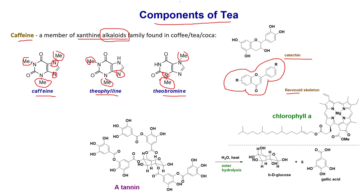Another big component is chlorophyll, which is present in every leaf. The brown coloring that gives tea and coffee its color is called tannin. The tannin molecule is pretty complex — it has a glucose molecule, and in the presence of water or heat when you brew the tea or coffee, it can break down into glucose and gallic acid. So bear in mind that a tea solution is a complex mixture.